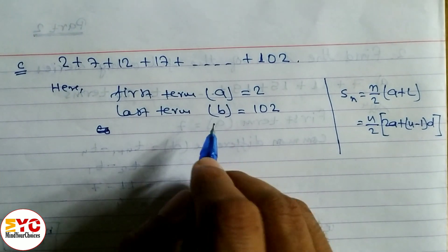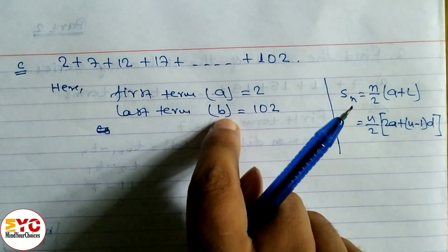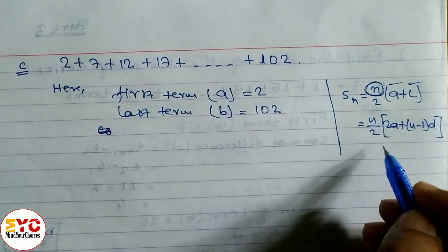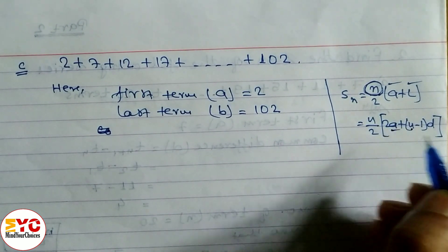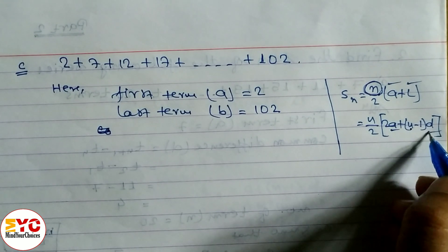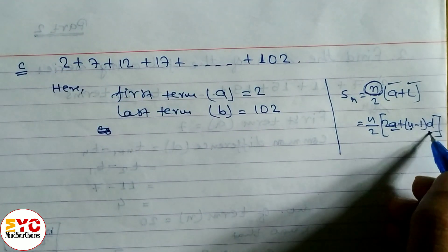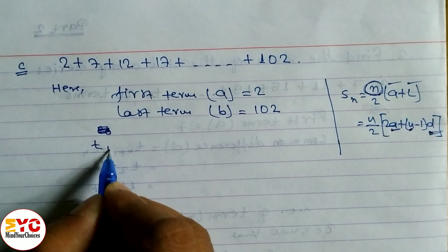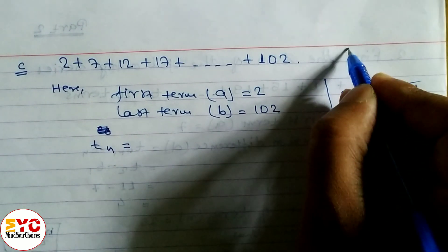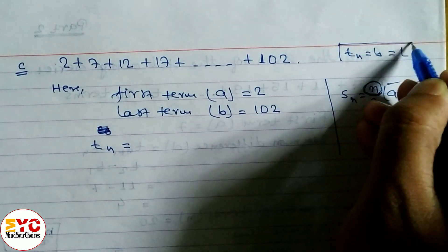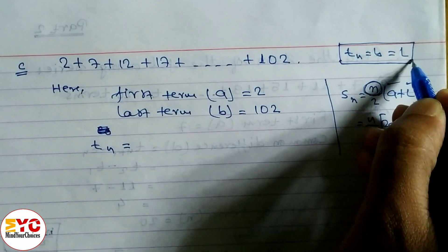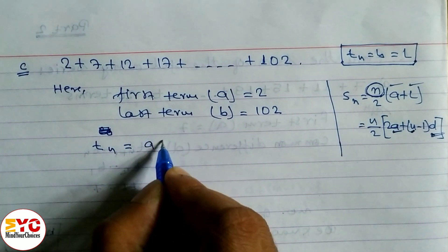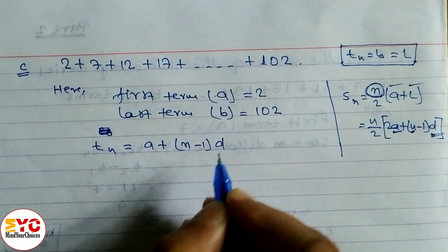To find n, we use the nth term formula: TN = a + (n−1)d. Common difference d = 7 − 2 = 5. TN (last term) = 102. So: 102 = 2 + (n−1) × 5.